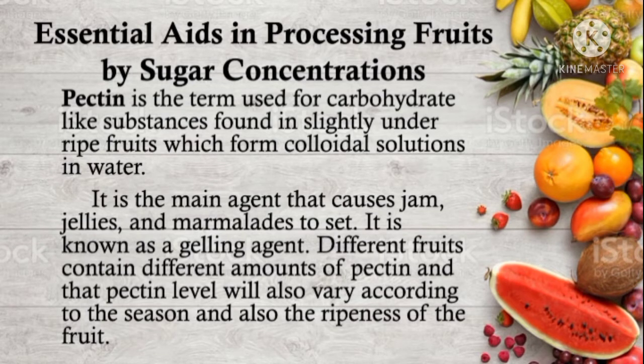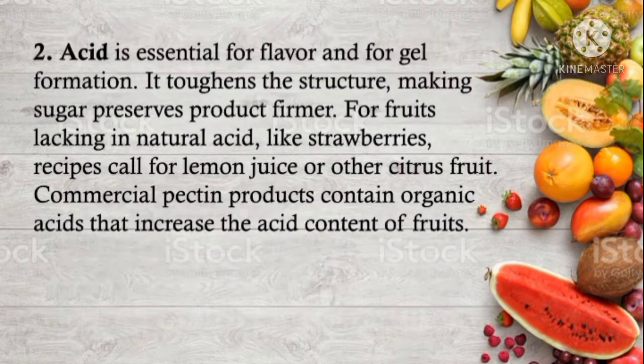So what are the essential aids in processing fruits by sugar concentration? The first is pectin. It is the term used for carbohydrate-like substances found in slightly under-ripe fruits, which form colloidal solutions in water. It is the main agent that causes jam, jellies, and marmalades to set. It is known as the jellying agent. Different fruits contain different amounts of pectin, and that pectin level will also vary according to the season and the ripeness of the fruit.